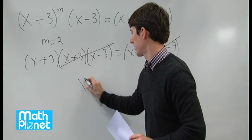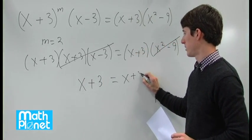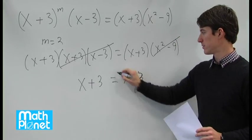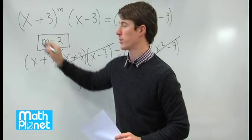That just gives us a remaining x plus 3 equals x plus 3, and since that's true, we've proved it. So our guess of m equals 2 was correct.